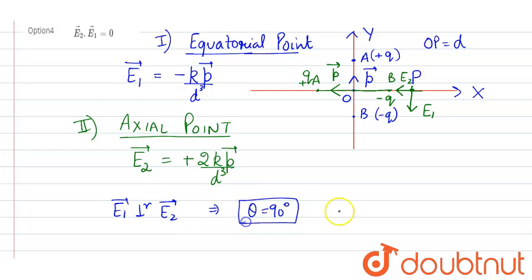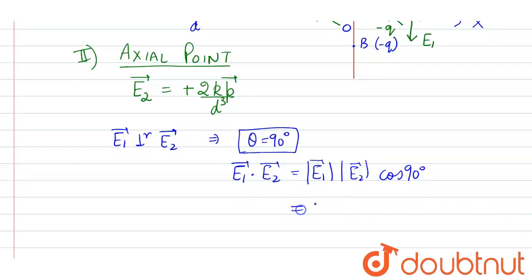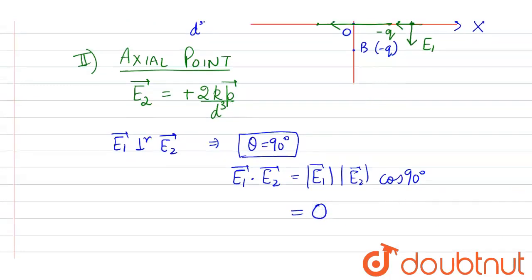And if we find the value of E1·E2 then E1·E2 will be equal to E1 magnitude E2 magnitude cos 90 and cos 90 will be 0. That means E1 into E2 is 0.